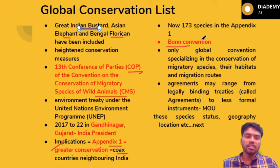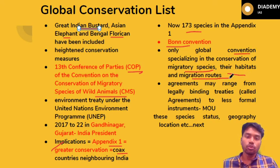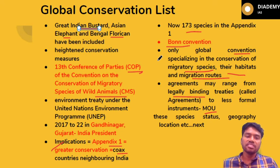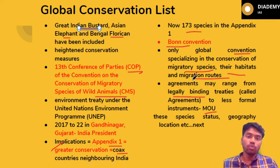Regarding the basics of the Global Conservation List under the Bonn Convention: there are more than 173 species in this list. This is the only global convention specialized in conservation of migratory species, their habitats, and their migration routes. Agreements under this convention range from legally binding treaties to memoranda of understanding between countries. Look at important species from India in this list, their habitats, national parks, and status such as critically endangered, endangered, or Schedule I of the Wildlife Protection Act.